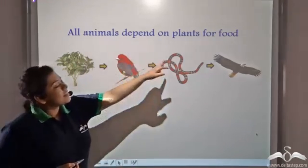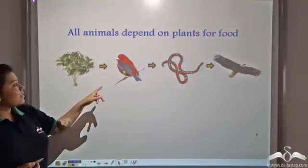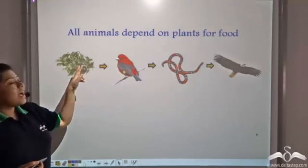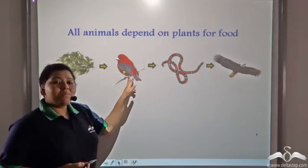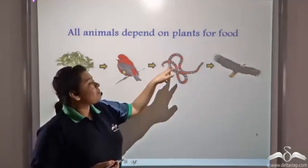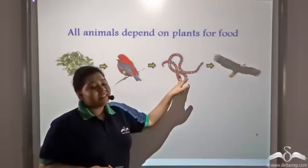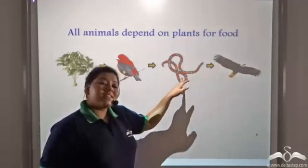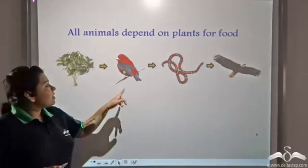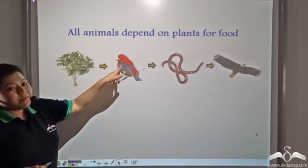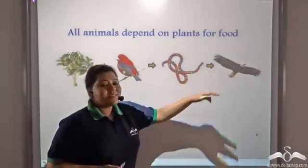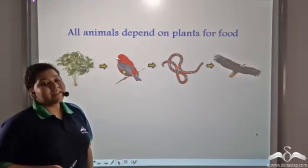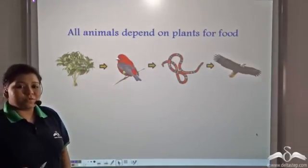Now let us see in this food chain what is happening. Birds have plants to survive. Now these small birds are consumed by snakes, and in turn, the eagles consume the snake. So here the bird is directly dependent on the plant, but these animals are indirectly dependent on plants for food.